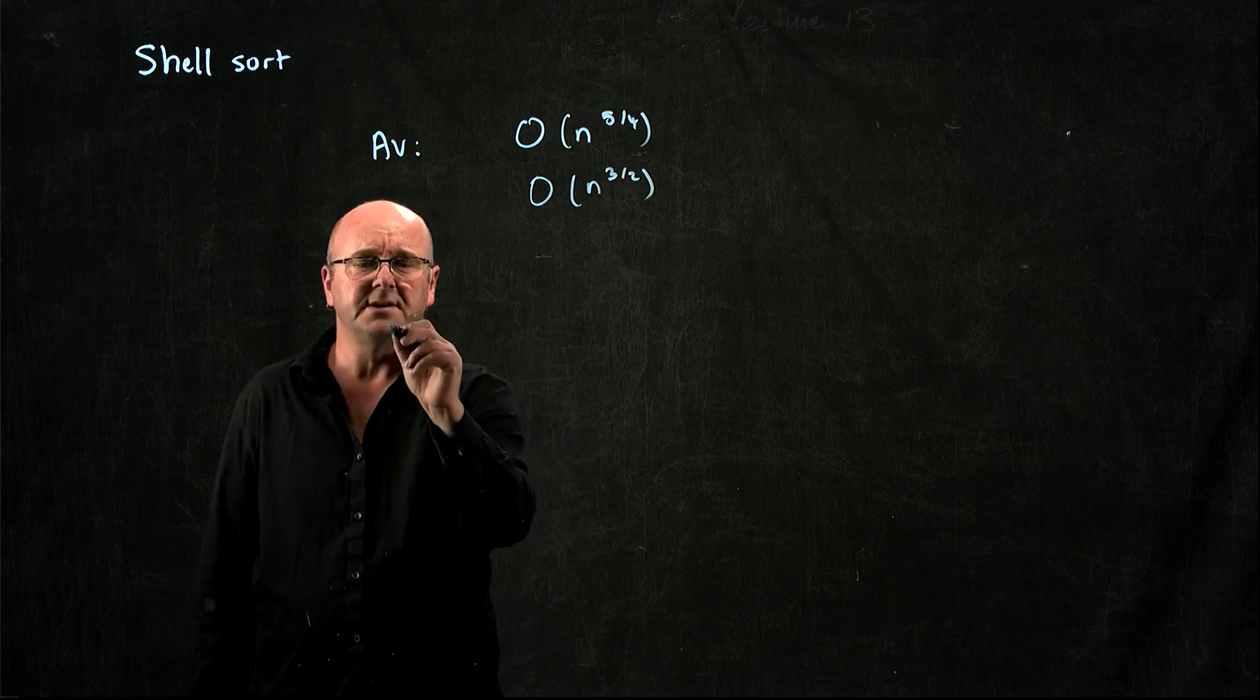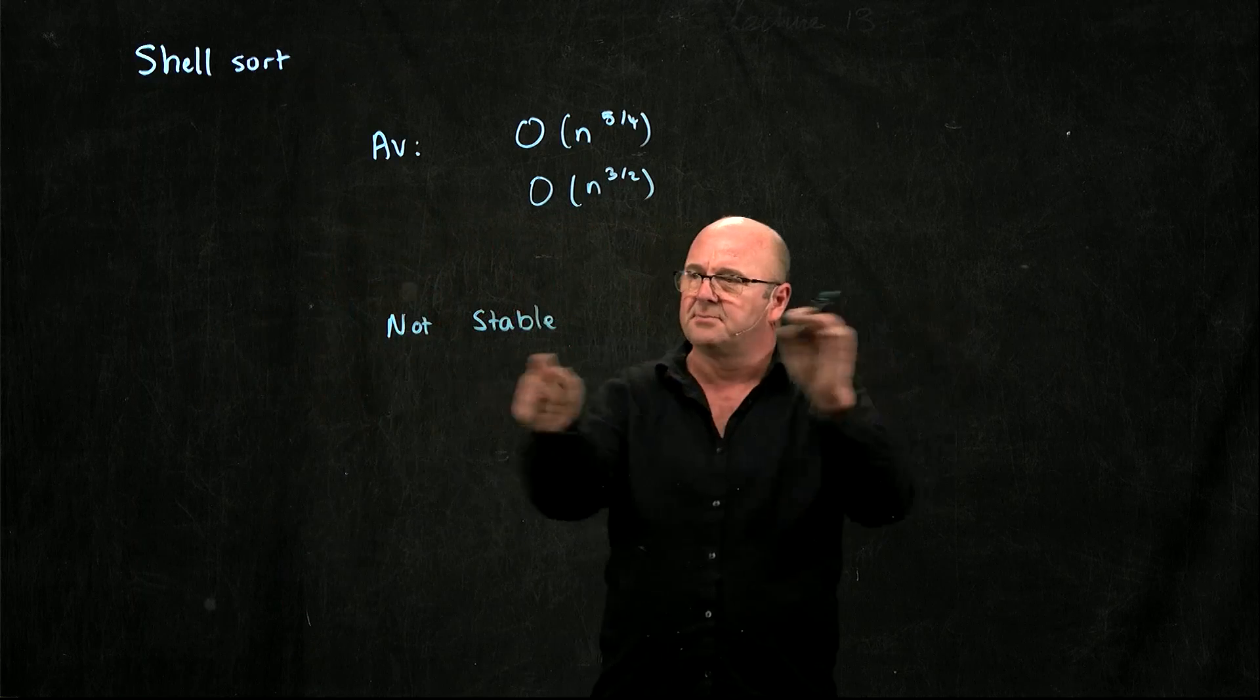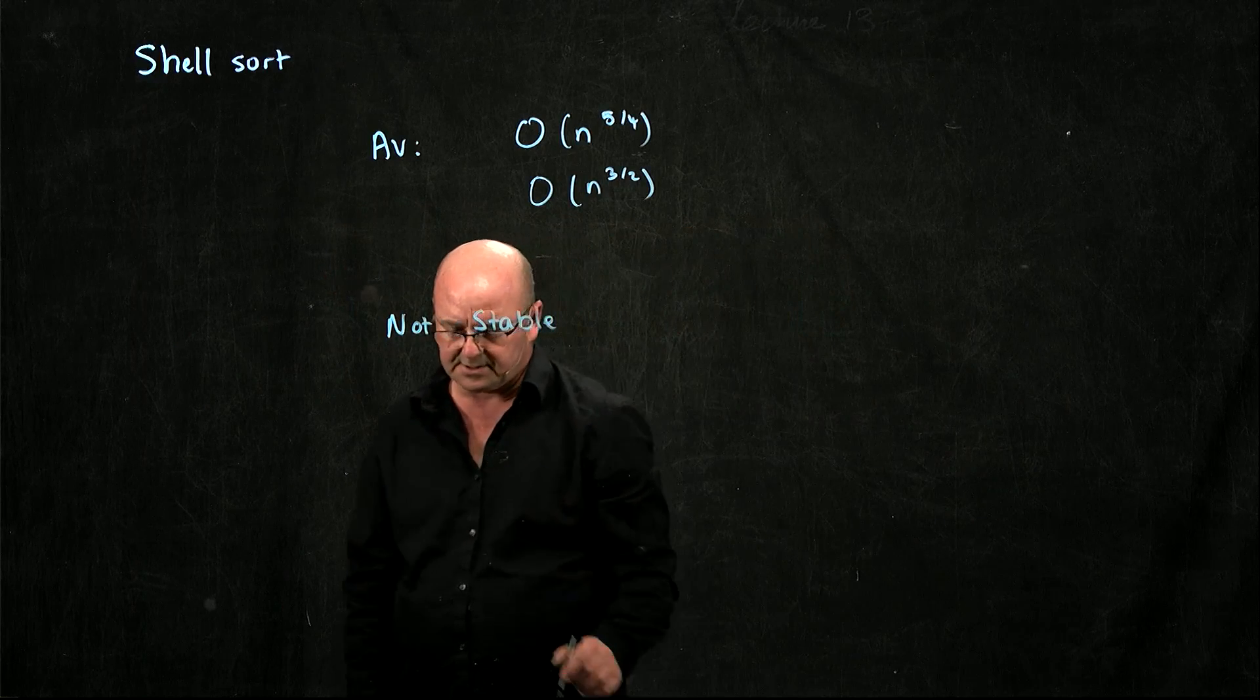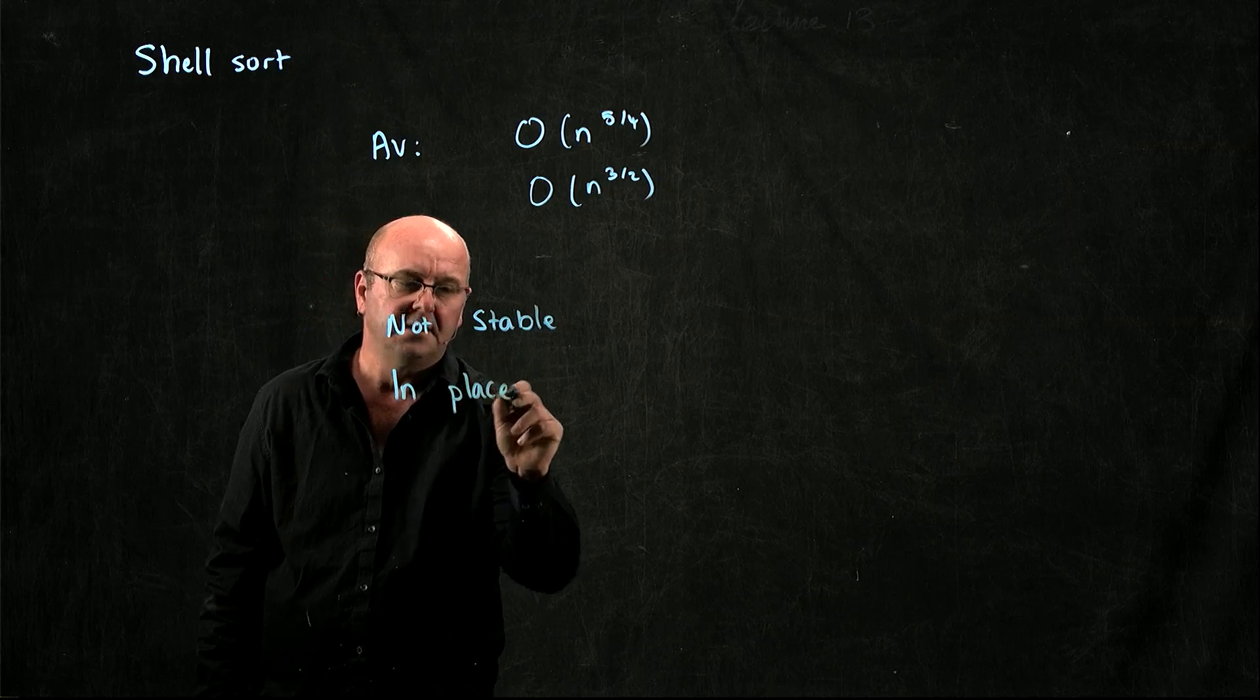The shell sort is not stable because you're sorting all of those little pieces before you finally do the last sort. But it is in place.